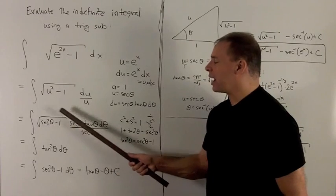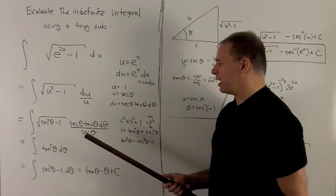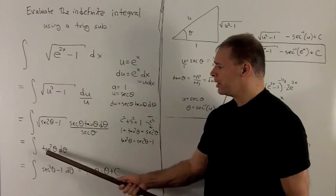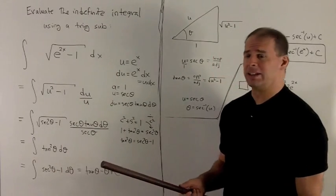So tan squared goes in there, the radical kills the square, and I'm just left with a tangent. We also have a tangent over here, so we're going to be left with tan squared theta d theta.